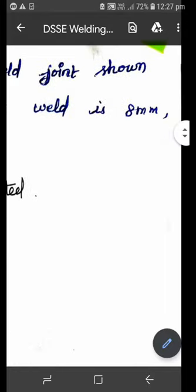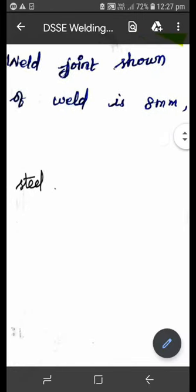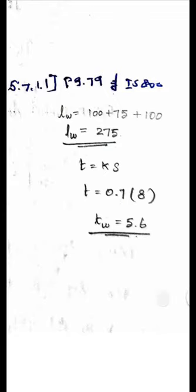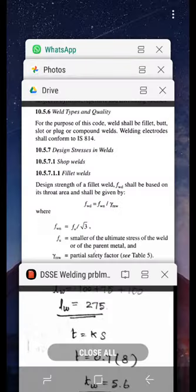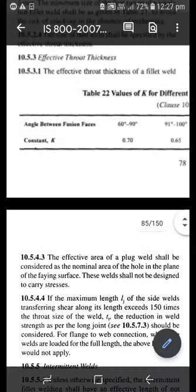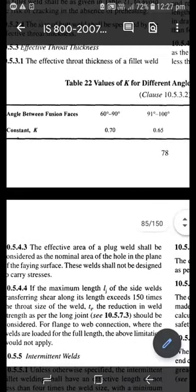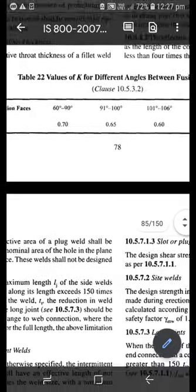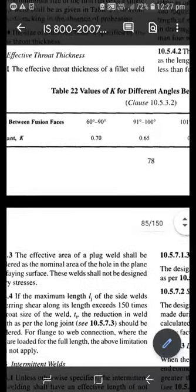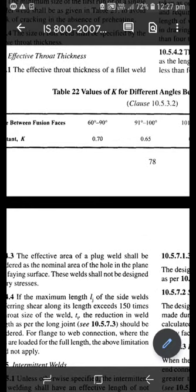See, size of weld is 8 mm, that is given in the problem. So the k value is 0.7. How I have obtained that value? That is obtained from Table 22, page 78.